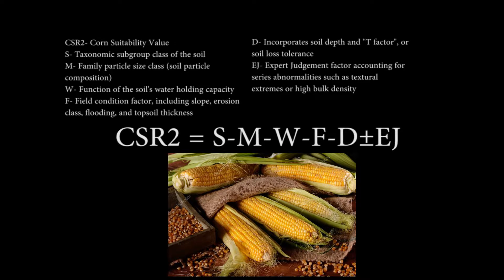Corn suitability rating. The CSR2 calculates the corn suitability value as: CSR2 equals S minus M minus W minus F minus D, plus or minus EJ. S is the taxonomic subgroup class of the soil, M is the family particle size class, and W is a function of the soil's water holding capacity.